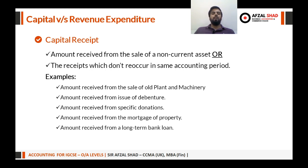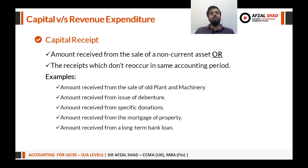Further examples include the amount received from the mortgage of a property — you don't mortgage property every month, so any amount received against a mortgage is a capital receipt. Also, the amount received from a long-term bank loan. Capital receipt is related to non-current assets or long-term liabilities — we are talking about long-term things.